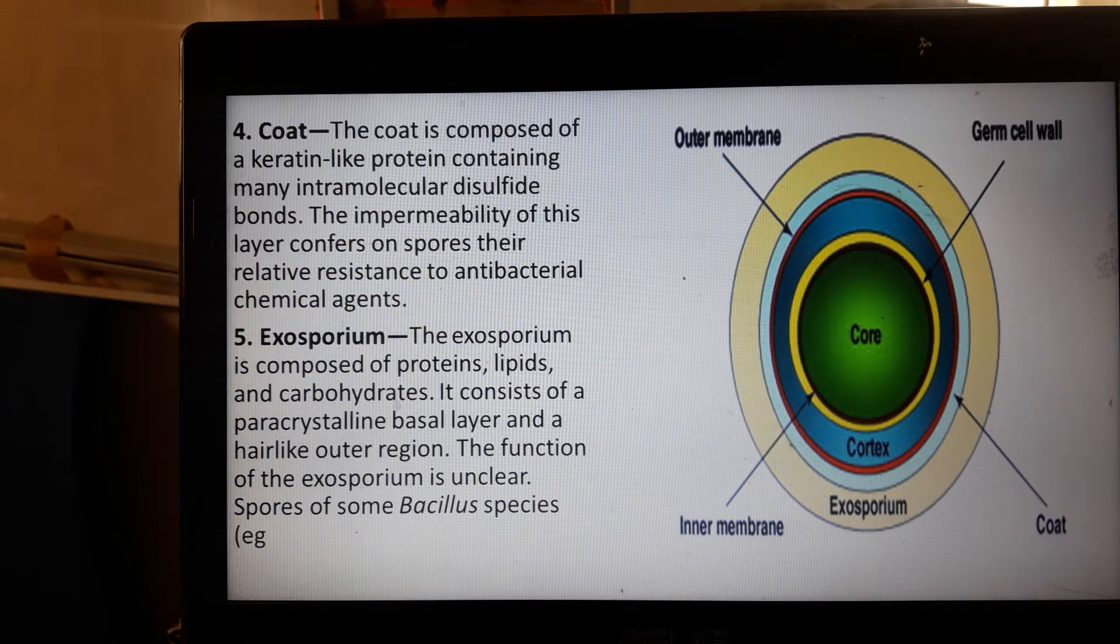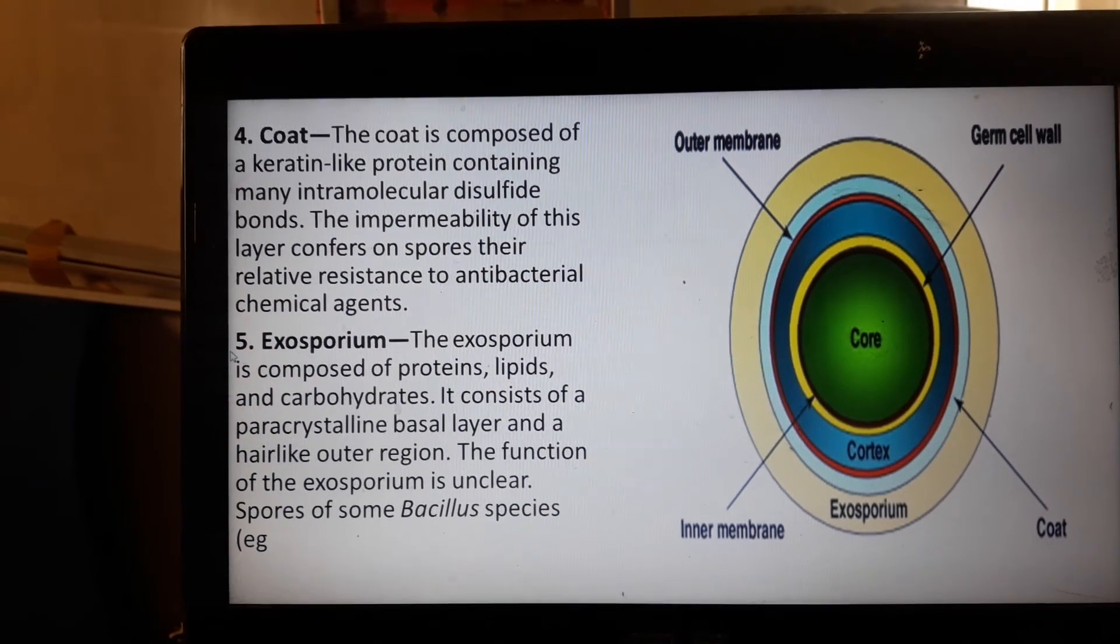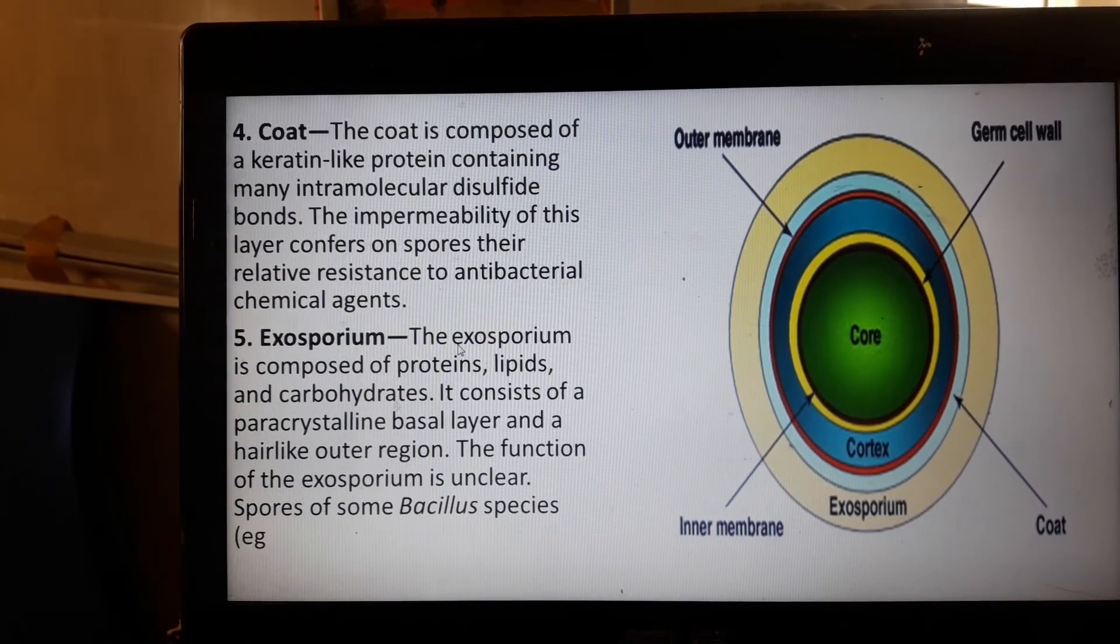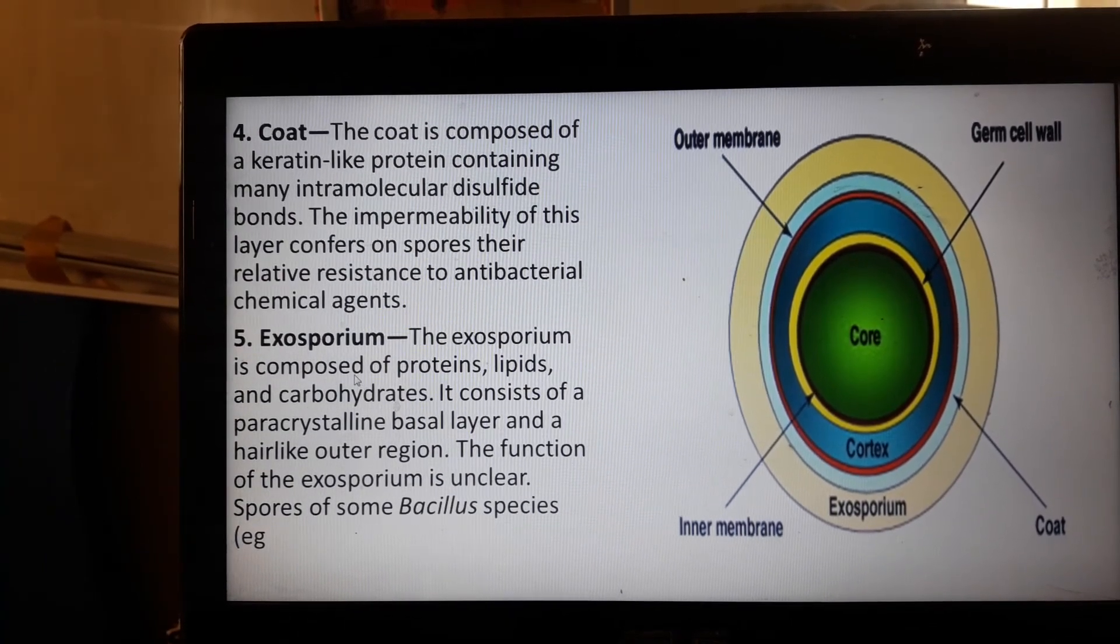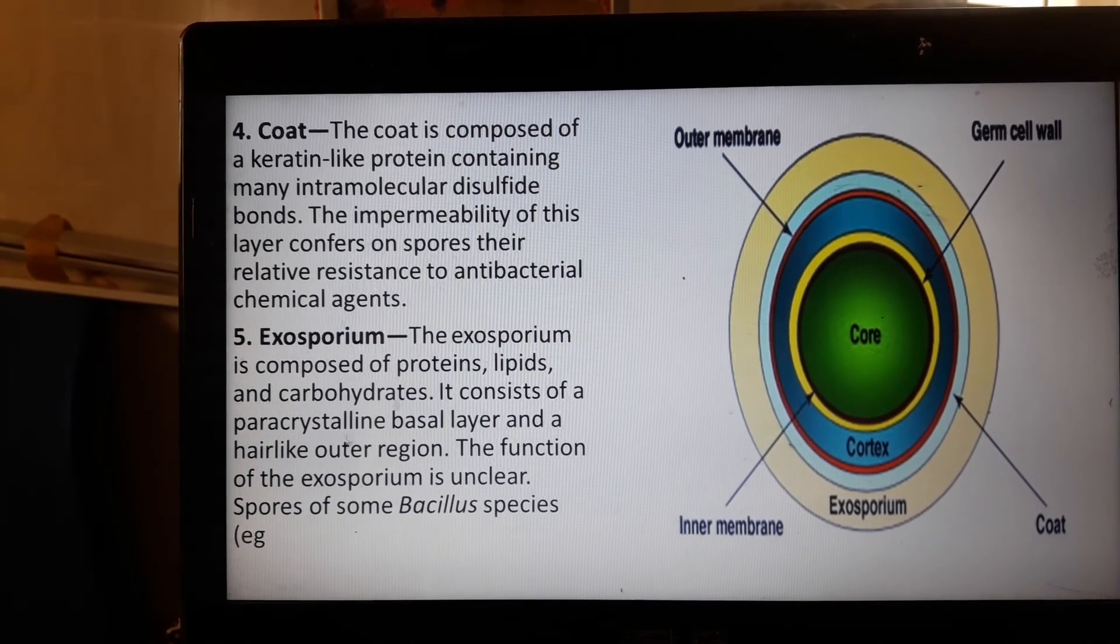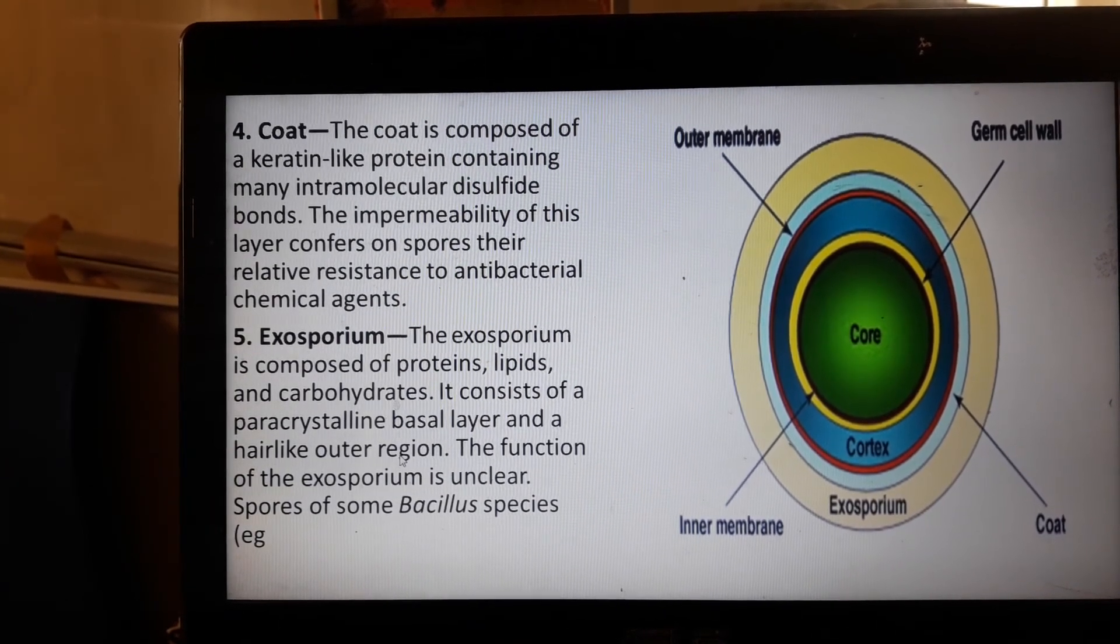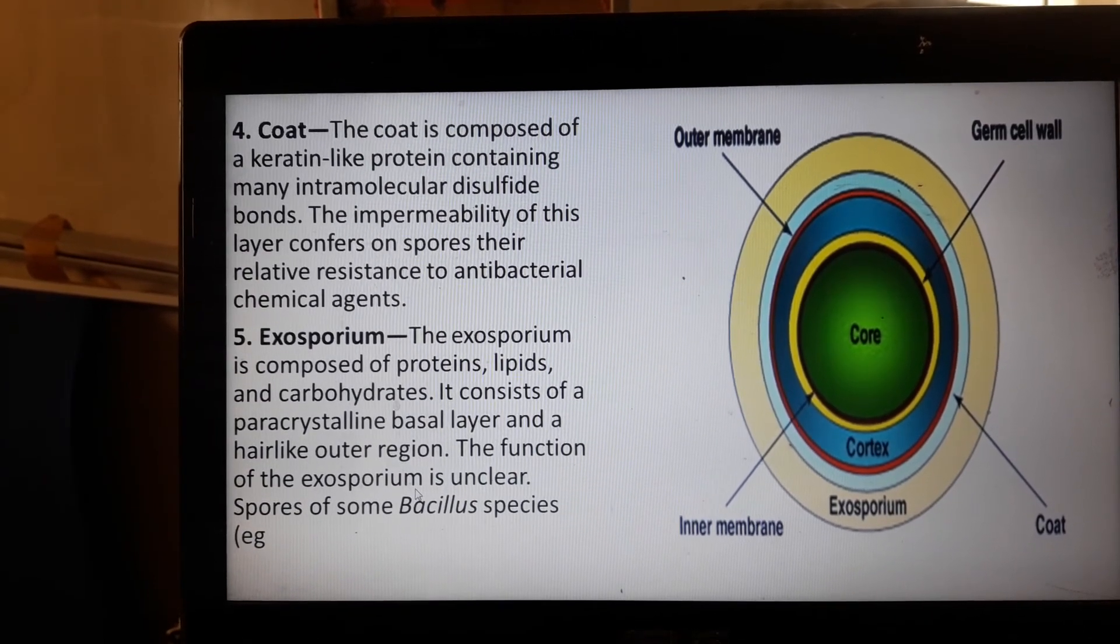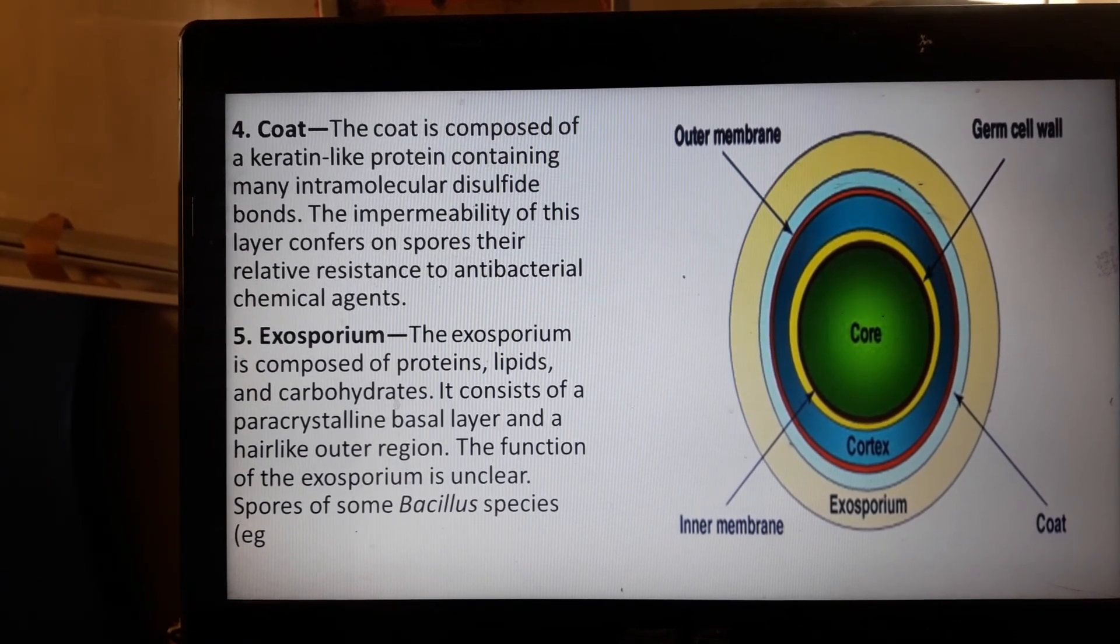The exosporium is the outermost layer, composed of proteins, lipids, and carbohydrates. It consists of a paracrystalline basal layer with hair-like outer regions. The function is considered to be unclear but it is also a protective layer of the spore.